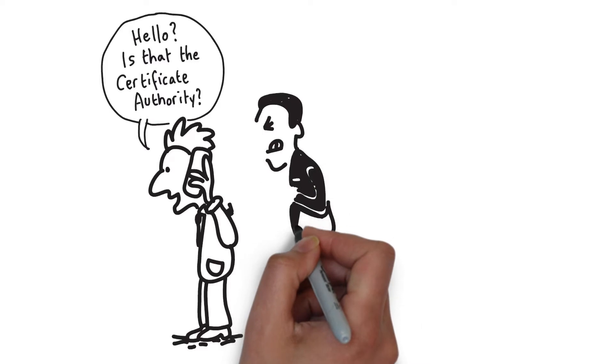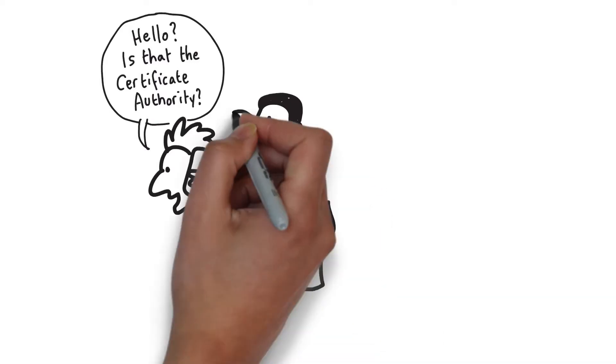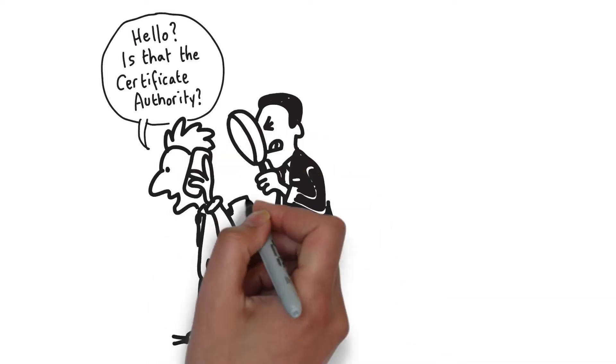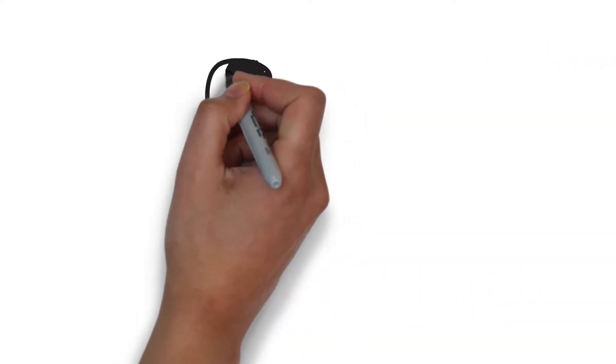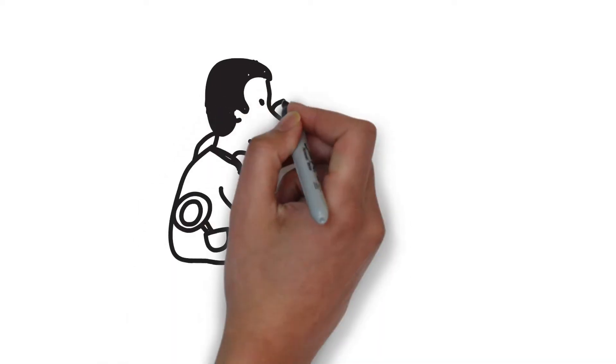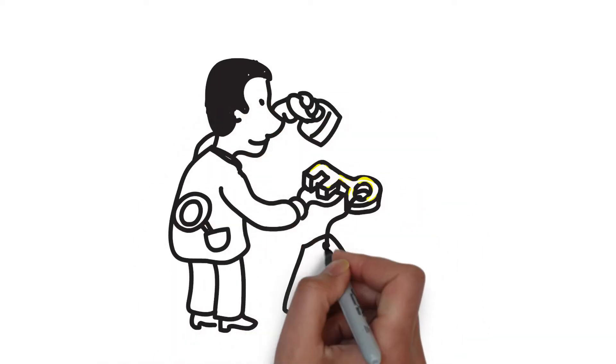They will then do some investigating to confirm that you are who you say you are. They will also check that you do in fact own vulcanize.com, and that you maintain control of it. After they have finished their background checks, they'll grant you a certificate and something else called a public key.